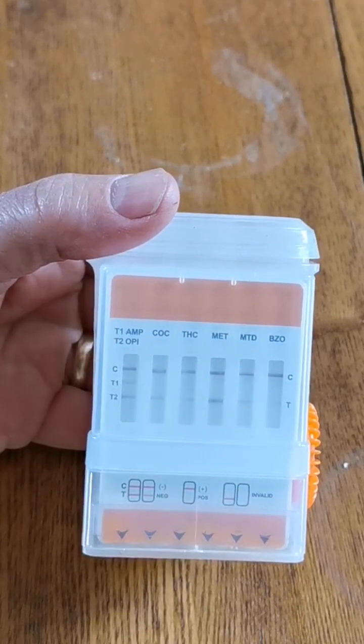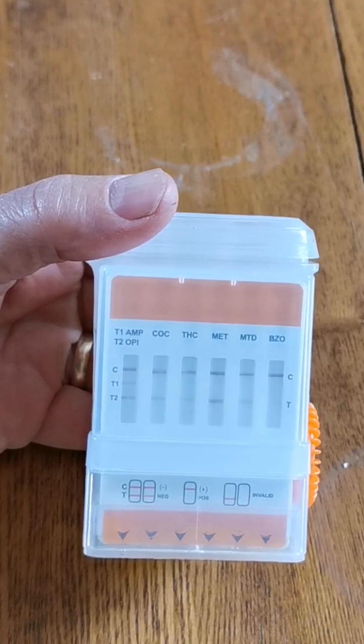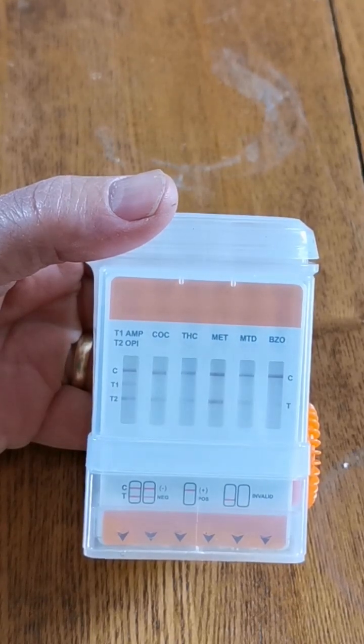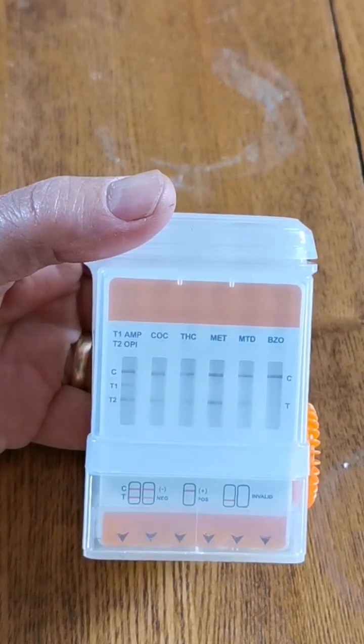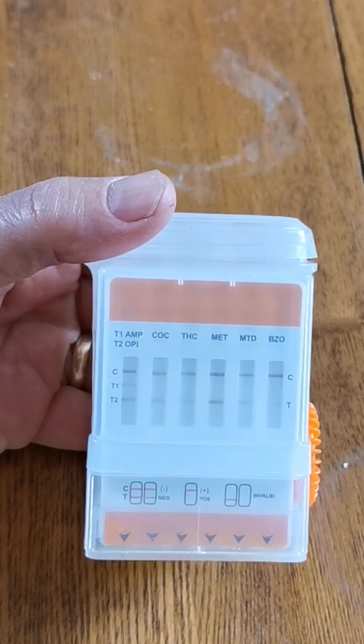You'll see that on column one we've got two results showing, so we've got a T1 and a T2. T1 results are for amphetamine and T2 for opiates.